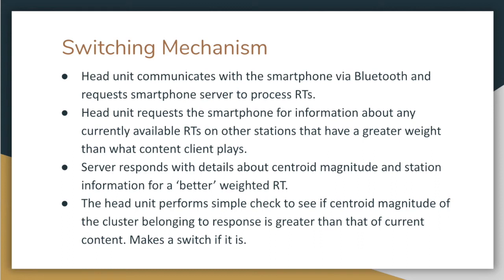Now that FMHOP has the preference clusters and information about which radio texts belong to which preferential group, we can check if switching is needed on the client side. The head unit communicates with the smartphone via Bluetooth, sending any received radio texts to the smartphone for processing. The head unit periodically requests information about currently available radio texts that have a greater weight than the currently playing content. The server responds, and the head unit checks if the potentially better content belongs to a cluster with a larger centroid magnitude and switches accordingly. FMHOP clients will only switch to a station if the track belongs to a group with higher centroid magnitude.